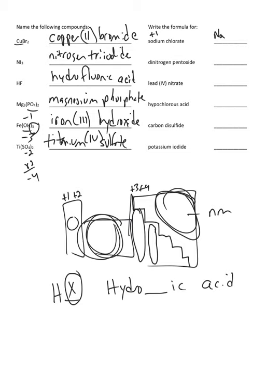In the D block, most elements have plus one or plus two charges; some have plus three or plus four. It all depends, and we usually determine that from the chemical formula.